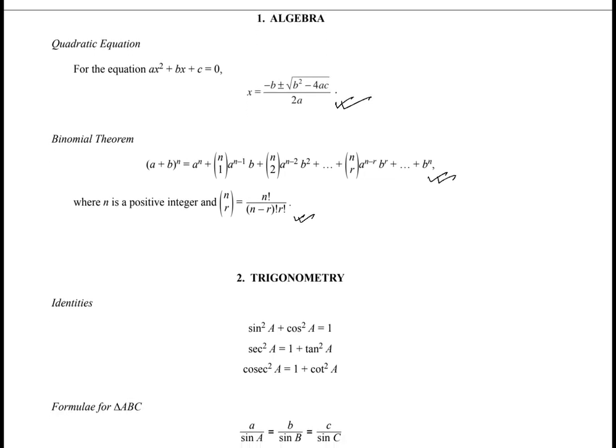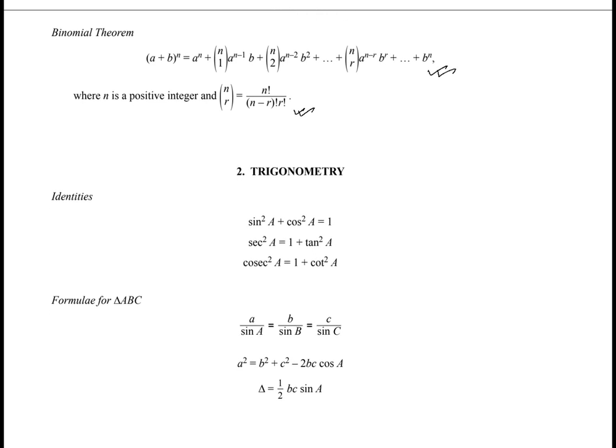Let's go to the trigonometry section, where a few identities are given. This shows the relationship between sine and cosine. The next one shows the relationship between sec and tan, and the last one shows the relationship between cosec and cot.